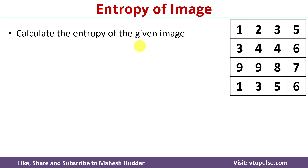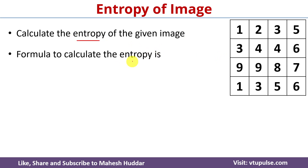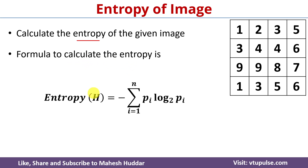Given this image, we need to understand how to calculate its entropy. To calculate the entropy of a given image we use this formula: entropy equals minus the summation of p(i) times log base 2 of p(i), for all i from 1 to n.